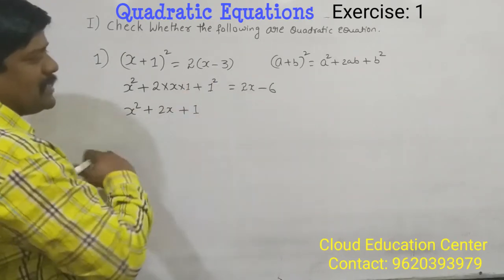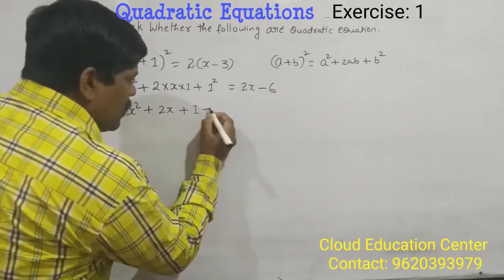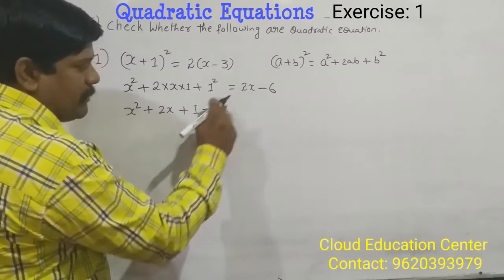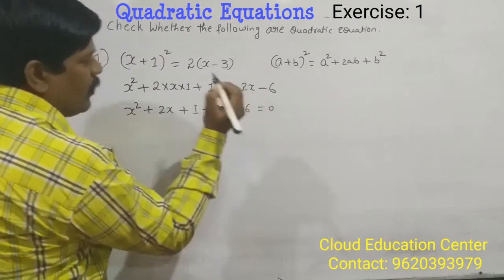Okay, so now bring this 2x minus 6 to the LHS, that is minus 2x and minus 6 become plus 6 is equal to 0.